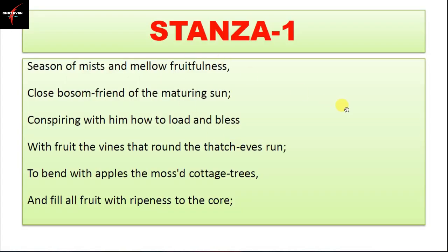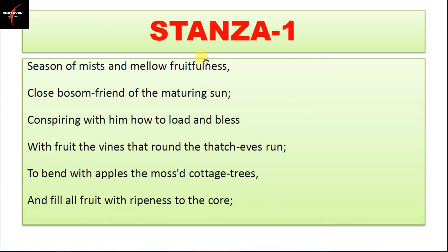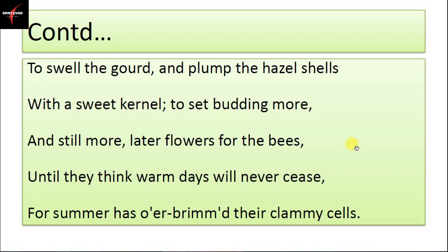Now we will study the poem. Stanza one: 'Season of mists and mellow fruitfulness, close bosom-friend of the maturing sun, conspiring with him how to load and bless with fruit the vines that round the thatch-eaves run; to bend with apples the mossed cottage-trees, and fill all fruit with ripeness to the core; to swell the gourd and plump the hazel shells with a sweet kernel; to set budding more and still more later flowers for the bees, until they think warm days will never cease, for summer has o'er-brimmed their clammy cells.'